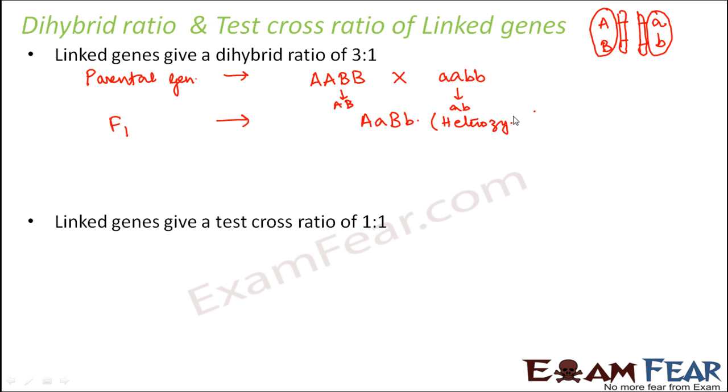So now the most important question is what are the gametes that can be produced by this? So this can form only two gametes that is capital A, capital B and small a, small b.